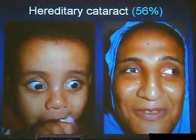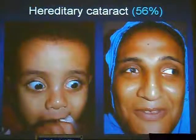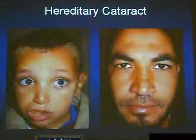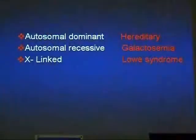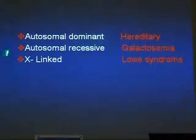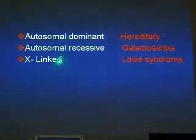The 56% hereditary cases — the mother gave a history of congenital cataract and while examining her baby, he also had congenital cataract. The father and his son similarly affected, and astonishingly we observed the same morphological type of cataract in the father. Whole families can be affected — aunt, father, uncle, grandmother, and six siblings all having congenital cataract, which is very common in Egypt. Hereditary cataract is most commonly autosomal dominant, however in Egypt we also see autosomal recessive inheritance. The most common autosomal recessive is galactosemia, and the most common X-linked inheritance is Lowe syndrome.